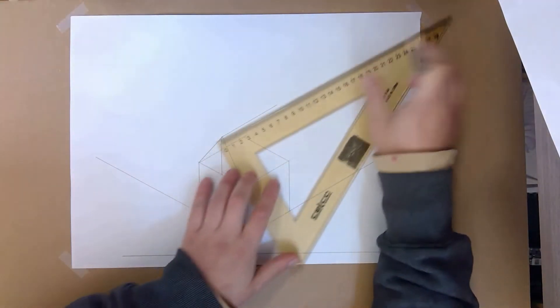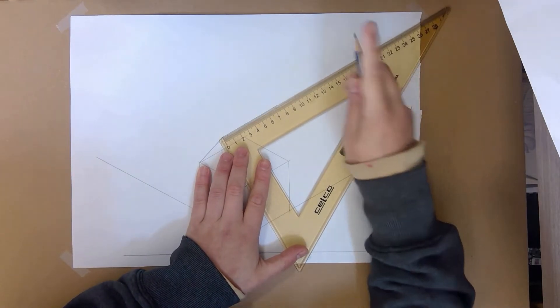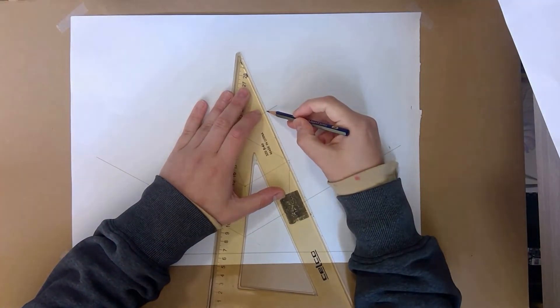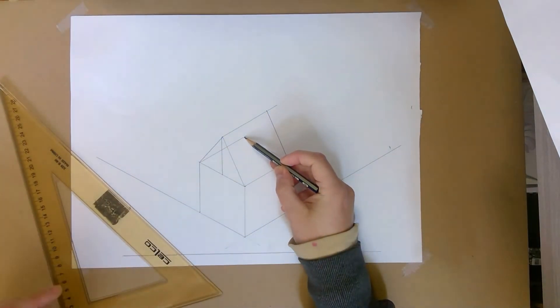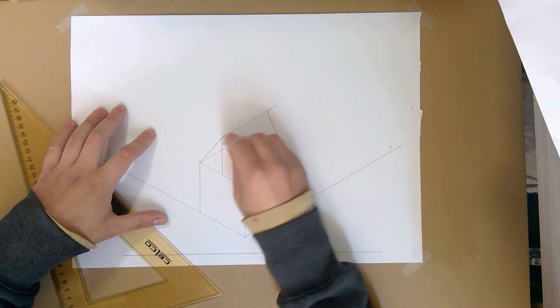And then what we're going to do is we're going to measure that line to be, you guessed it, six centimeters because we're working with the cube. We're going to mark it and then we're simply going to connect that top point to the back point. We don't need to worry about this section here because when we erase our lines, we actually can't see it.